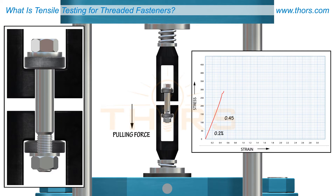At first, both stress and strain increase at a similar rate. But once the yield strength is reached, the fastener begins to strain at a greater rate, while only withstanding minor increases in stress.